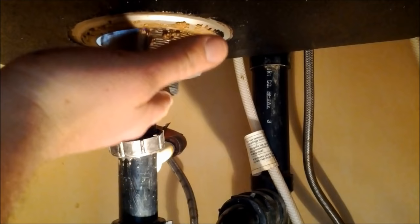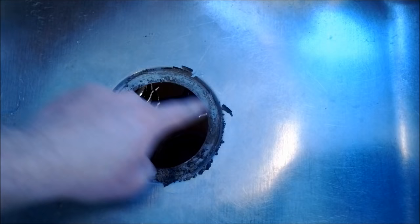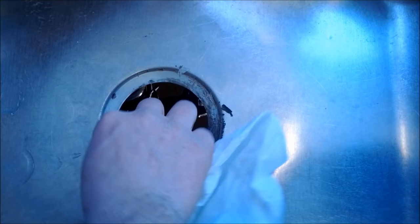Now that we have that nut removed, we should be able to lift the basket up and out. So once you remove the old basket, you want to clean this area. Here is where the new plumber's putty is going to seal. So we'll just take some paper towel and clean off all the old plumber's putty.